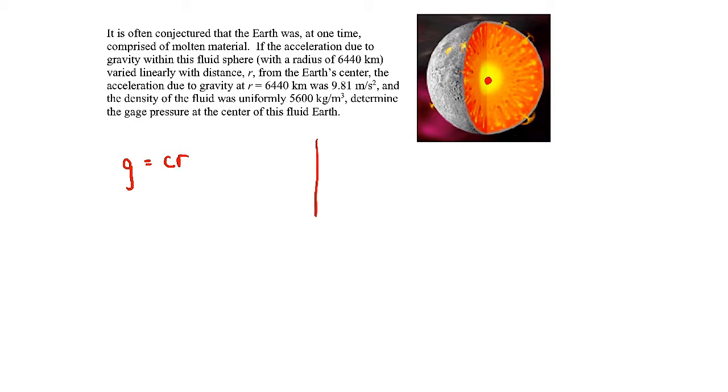So if I sketch that out, it looks like this, here's radius, here's gravity. It's going to be zero at the center, it varies linearly, so that means it's a straight line.